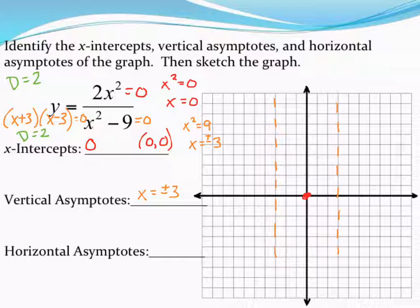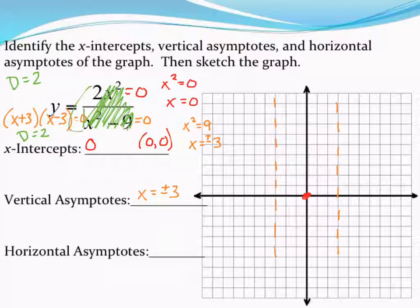According to the chart we just looked at, when you have equal degrees in top and bottom, the rule is to divide the leading coefficients. So I'm going to ignore everything except the leading coefficients. I know this is getting really messy, but bear with me. Cover up everything but the numbers in front and divide them. So 2 divided by 1 is just 2. I have a horizontal asymptote at y = 2.